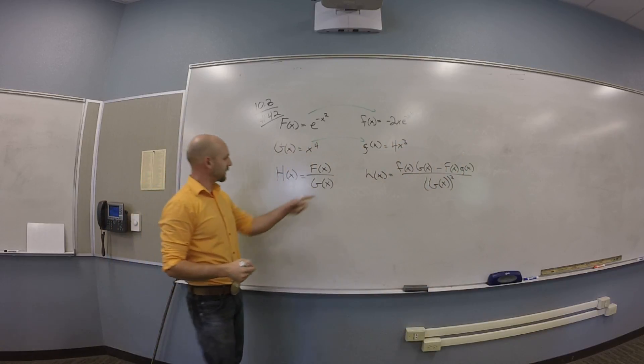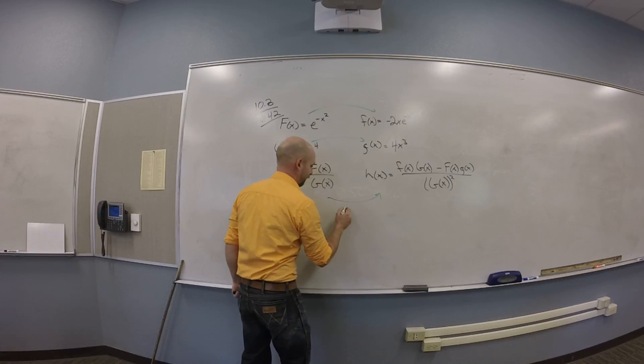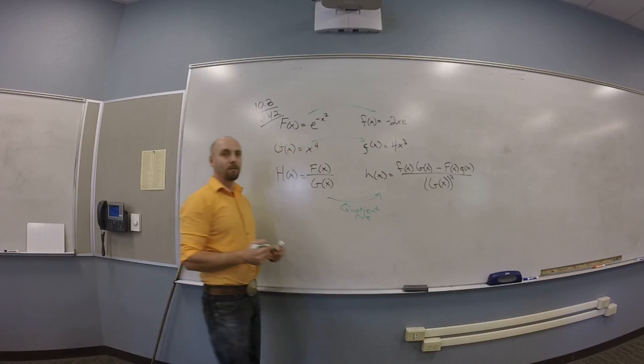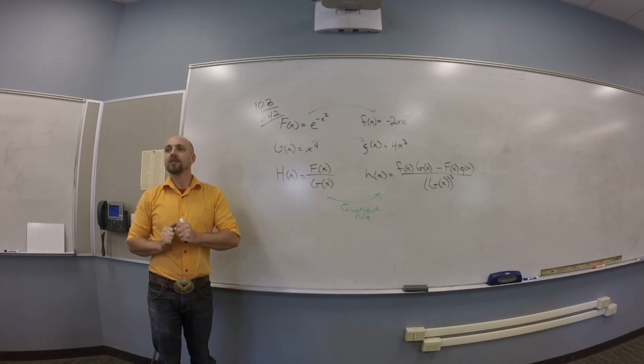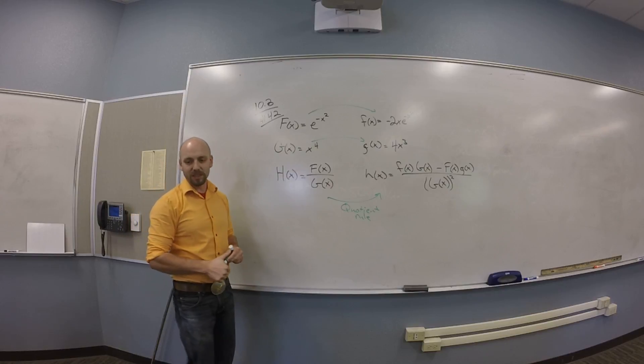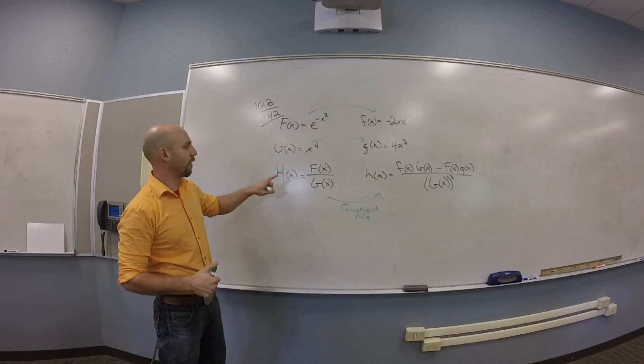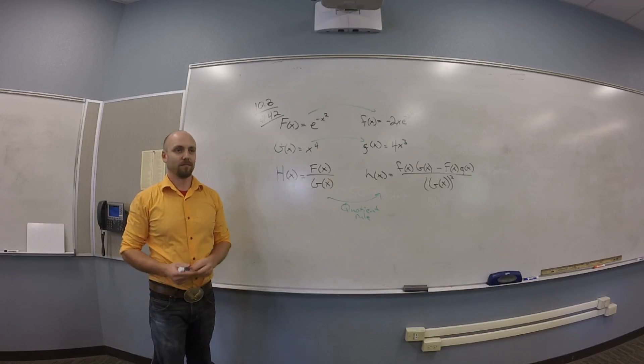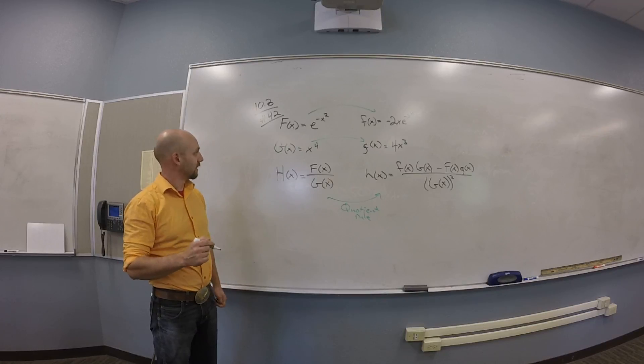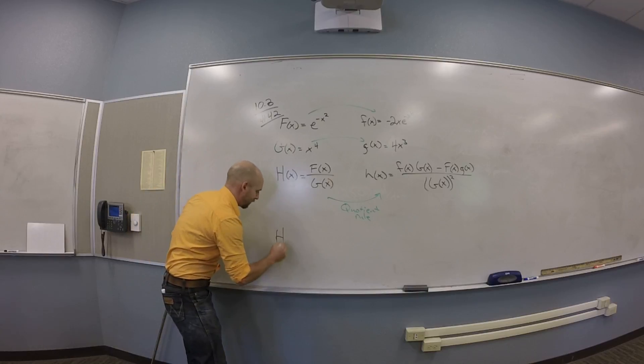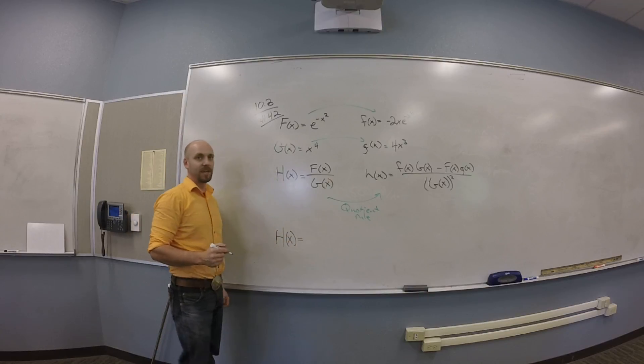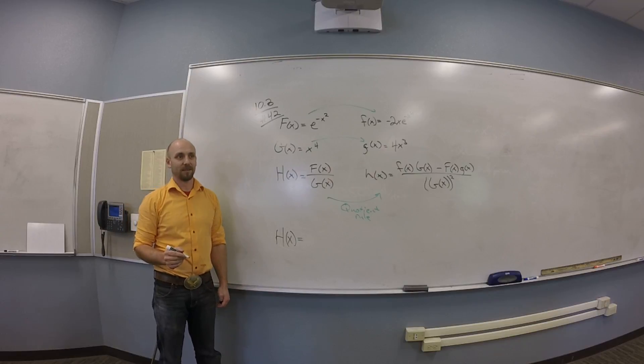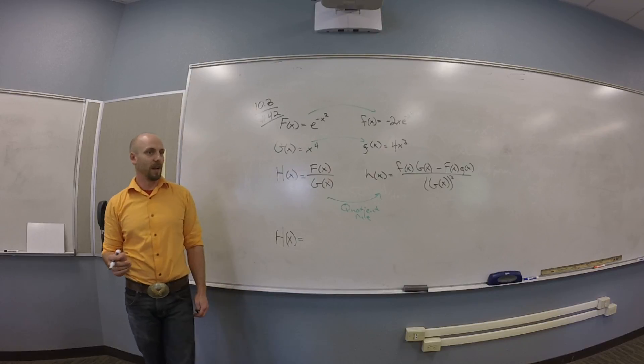So this is a thing here called the quotient rule, which just tells you how to differentiate quotients. Okay, so what they want you to do is find a simplified formula for H and little h. So one of these should be really easy. Capital H should be, I hope, dead easy.